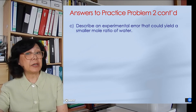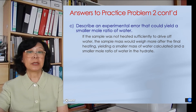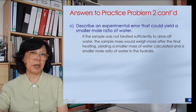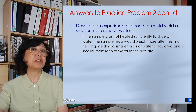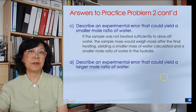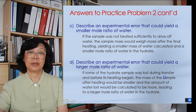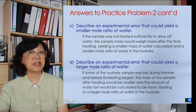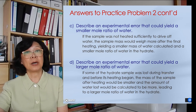Let's consider errors that could yield a smaller or larger mole ratio of water. If we did not heat the hydrate sample sufficiently to drive off all the water, the mass of the anhydrous would appear greater. By subtraction we would get a smaller calculated mass of water, so the mole ratio of water would decrease. Alternatively, if we lost some hydrate during transfer to the evaporating dish, the final anhydrous mass would weigh less than expected, making the calculated mass of water appear greater, giving a larger mole ratio of water in the hydrate.